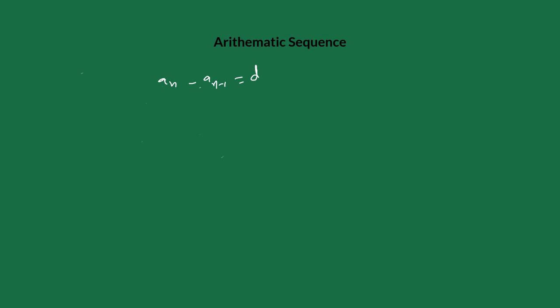In the same sense, we can write a_n minus a_(n-1), where a_(n-1) is the previous term of a_n. According to the definition, the difference is a_n minus a_(n-1), and keep in mind n is always greater than 1. By rearranging this equation, we can write a_n equals a_(n-1) plus d.